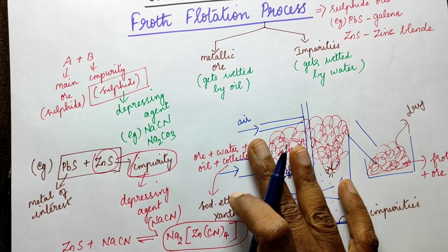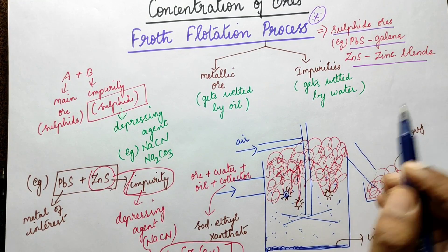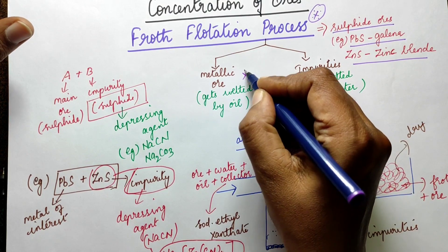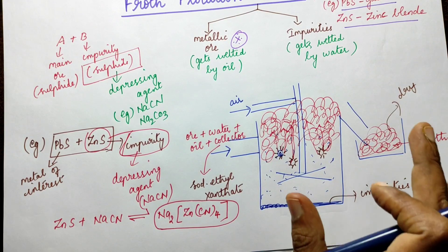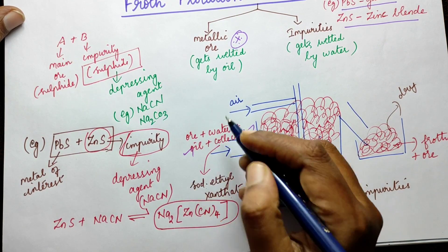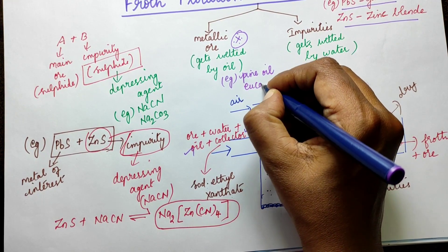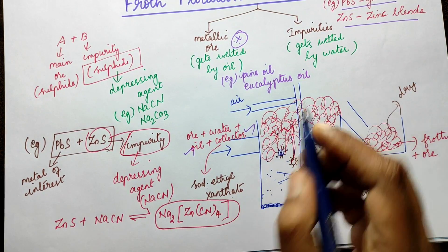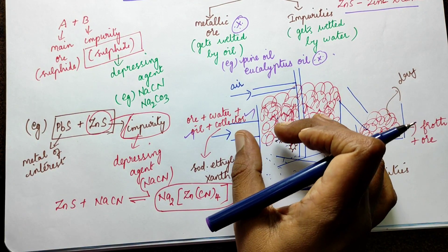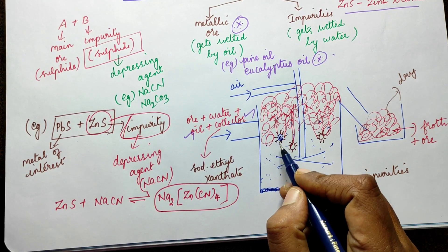For a 5-mark question on froth flotation process, you need to cover: the basic principle — the metallic part of the ore gets wetted by oil; the collector — sodium ethyl xanthate; the oils used — pine oil, eucalyptus oil; and the apparatus — compressed air, stirrer.